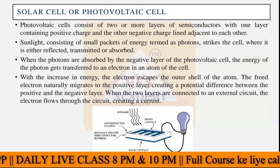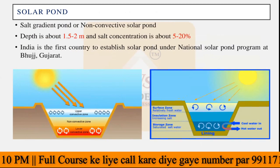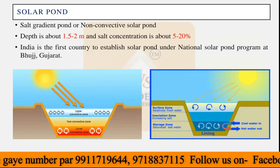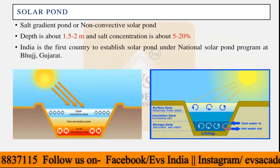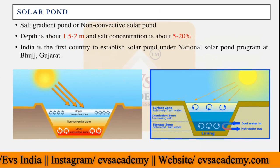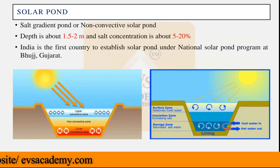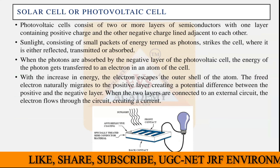One thing to remember about the solar pond is that you can calculate its efficiency using the same formula. Instead of the area of a solar plate, you use the area of the solar pond — it acts as a photovoltaic cell or solar cell, and the formula does not change. The next important topic we have to discuss in solar energy is the solar cell or photovoltaic cell.